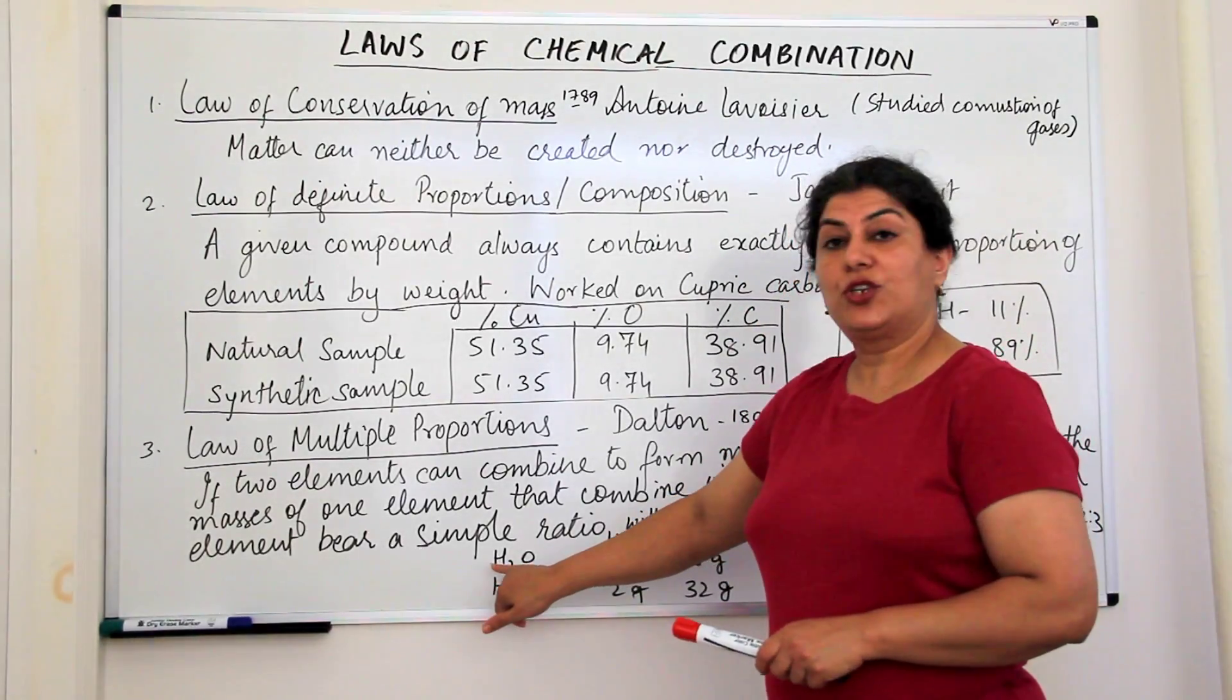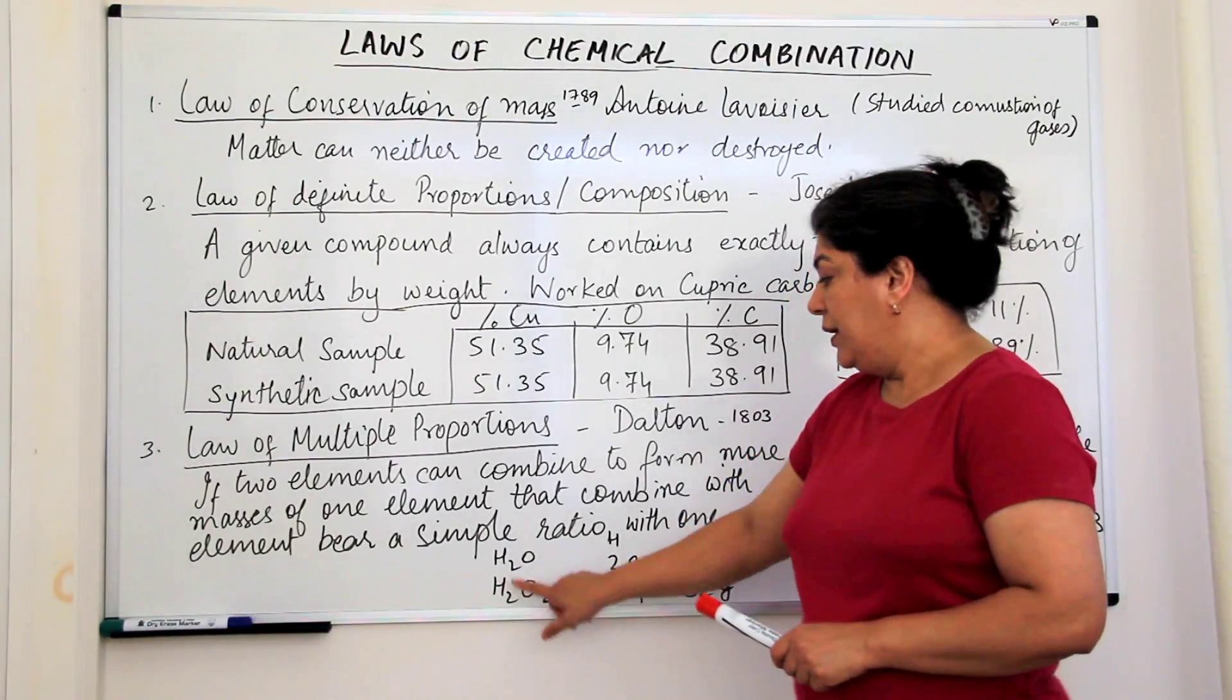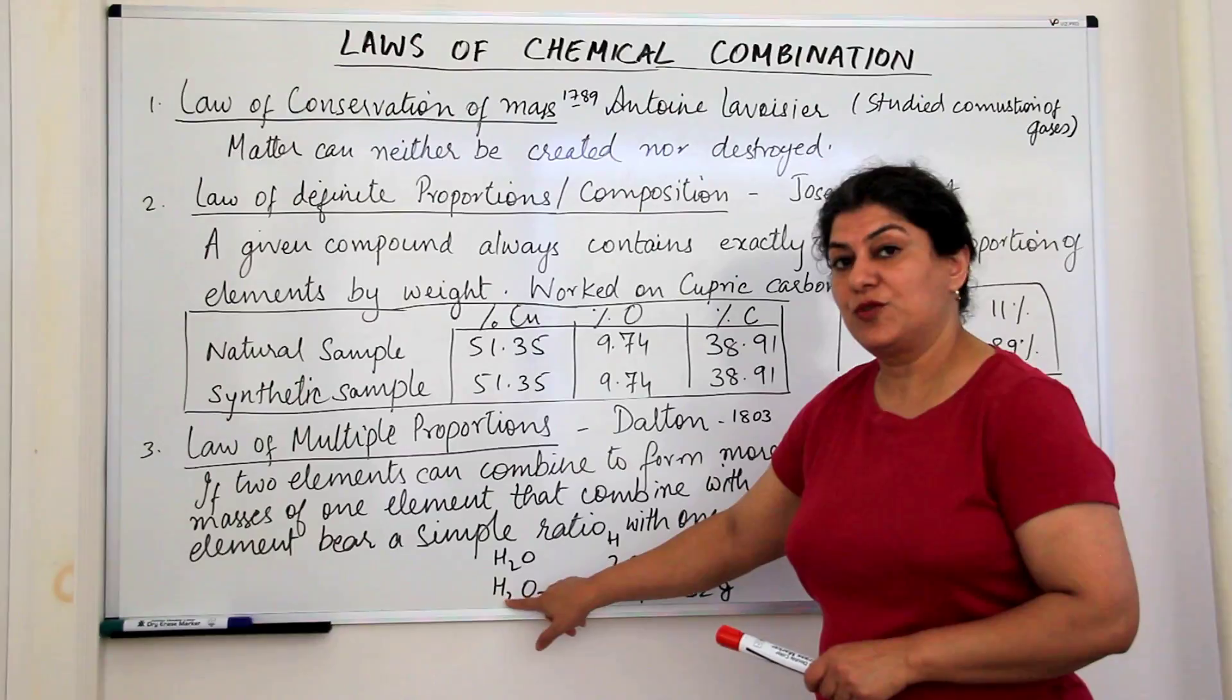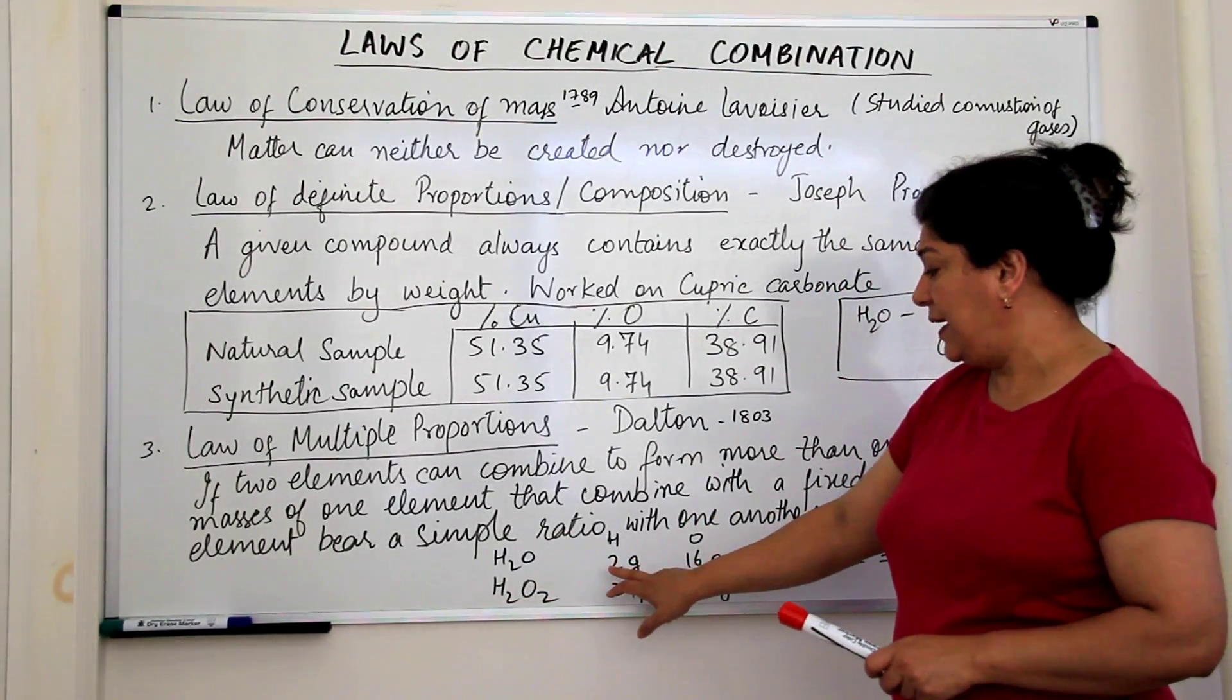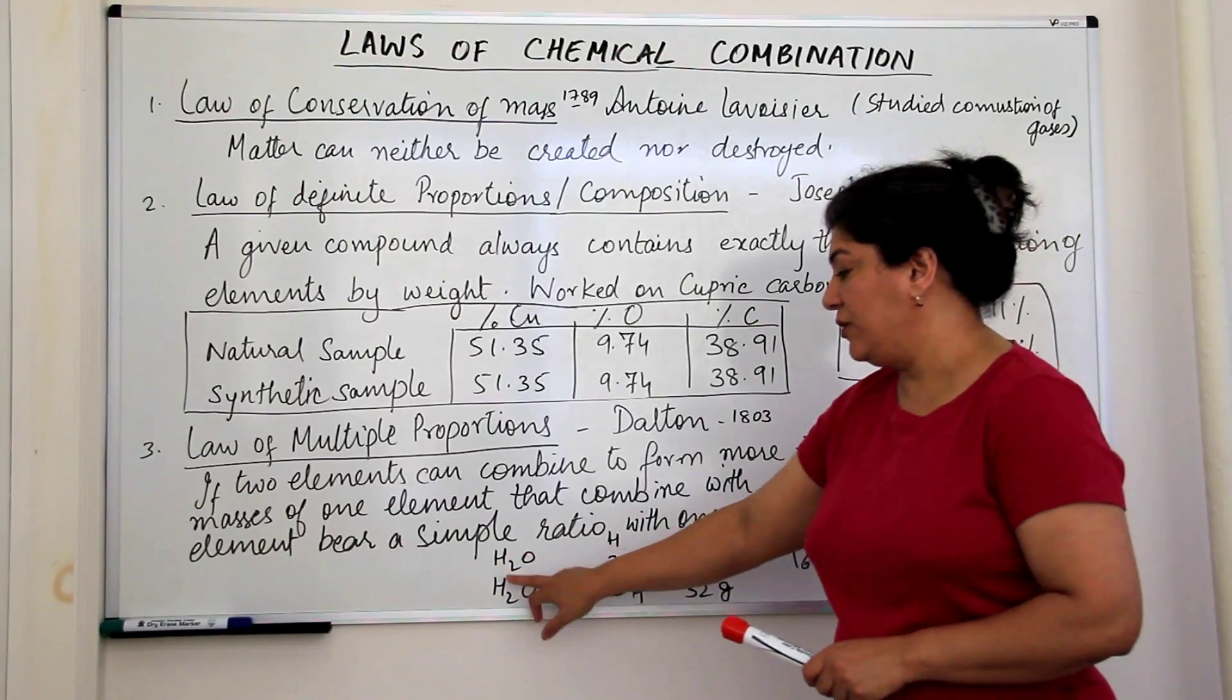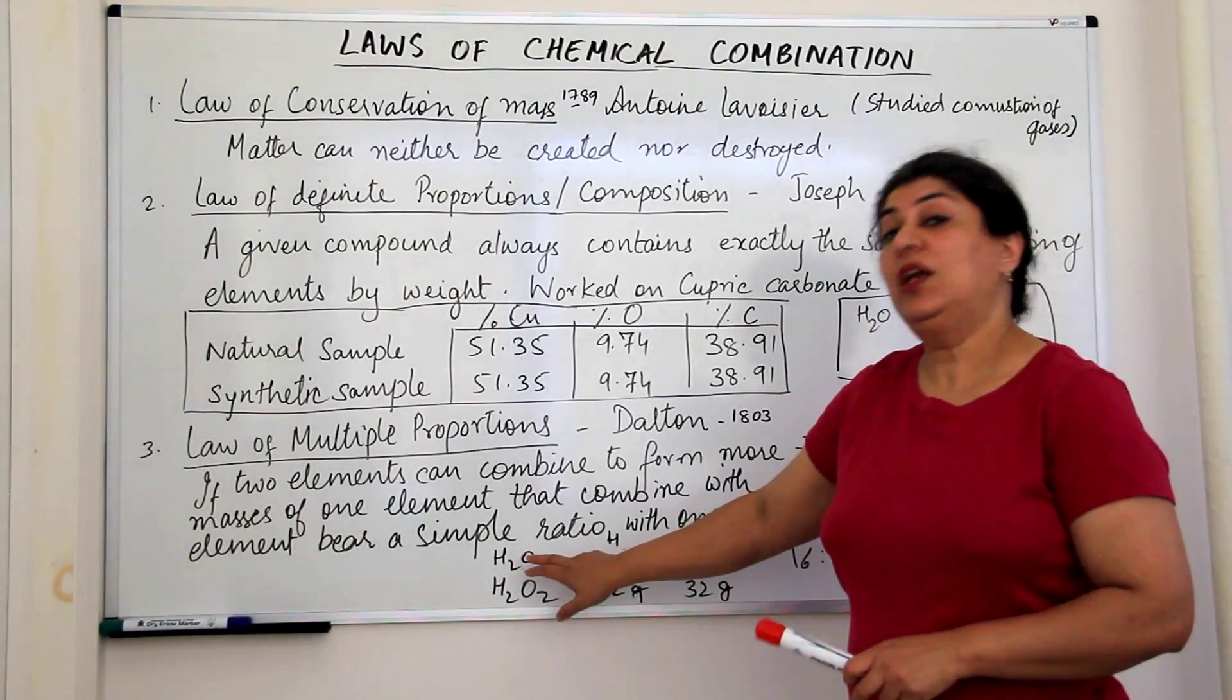Now the example that we took was water and hydrogen peroxide. The formula of water is H2O and hydrogen peroxide is H2O2. You see in both the molecules, H2, there are two atoms of hydrogen. So if you have two grams, we take the molar mass, if you take two grams of hydrogen in water, then there should be 16 grams of oxygen in water.